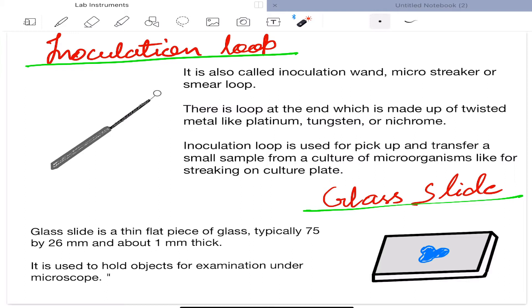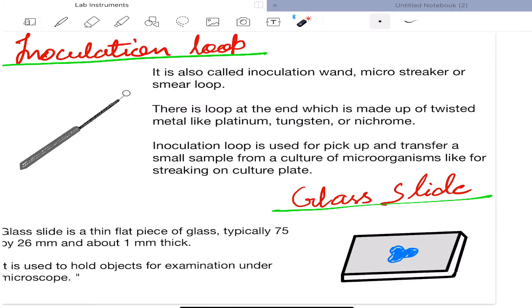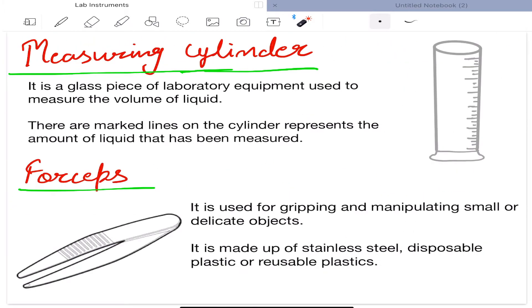Next is glass slide. Glass slide is a thin flat piece of glass, typically 75mm by 26mm and about 1mm thick. It is used to hold objects for examination under microscope. Next is measuring cylinder. It is a glass piece of laboratory equipment used to measure the volume of liquid. There are marked lines on the cylinder representing the amount of liquid that has been measured.